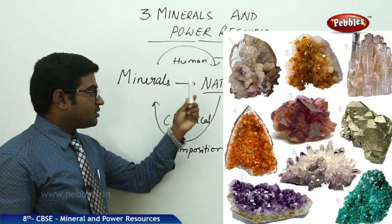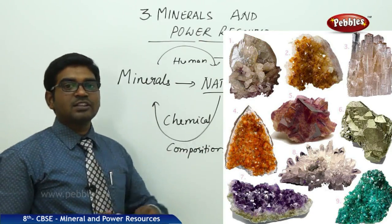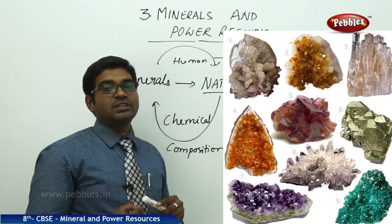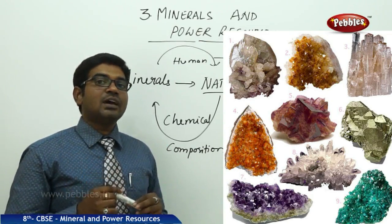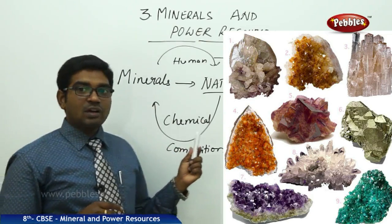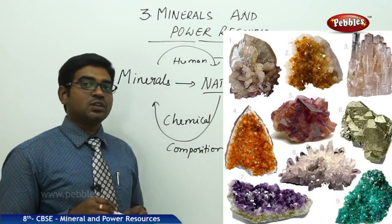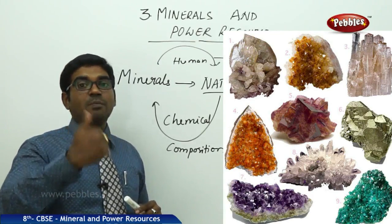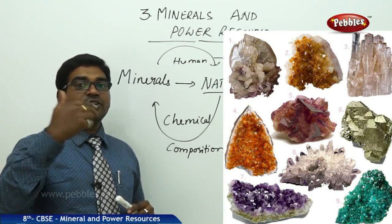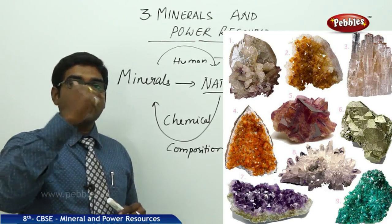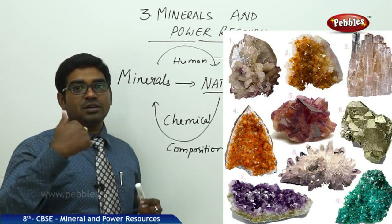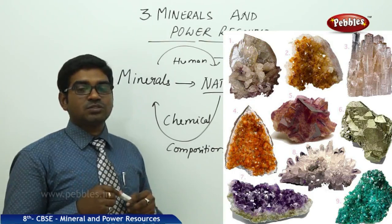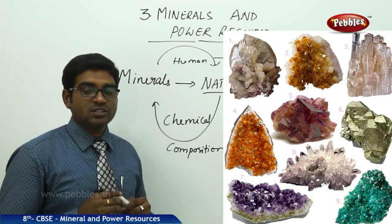These minerals are differentiated based on color, thickness, availability, and different other categories. The differences are found in their chemical composition. A mineral formed in nature has different properties because when it is combined with different chemicals, the same chemical may give a different type of reaction depending on the other component added. This can also be used as a resource to generate electricity or power.